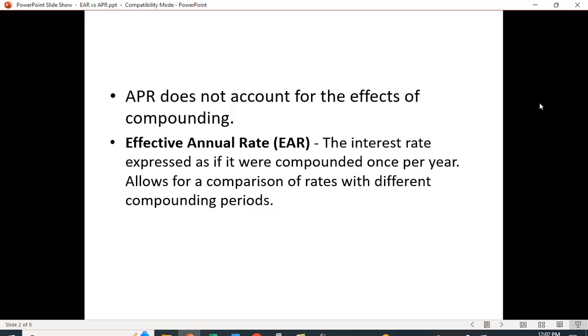What the APR does not do is account for the effects of compounding. The effective rate does account for compounding, so this interest rate is expressed as if it were compounded once per year. This allows us to do comparisons of rates with different compounding periods. For example, suppose you could get 12.5% compounded annually or 12% compounded daily. What's the better choice? If we calculate the effective rate for the 12% compounded daily, we can compare it to that 12.5% rate and determine which is better.